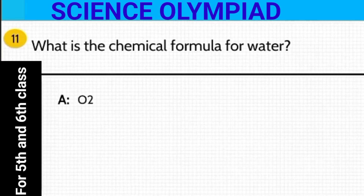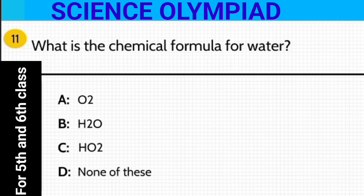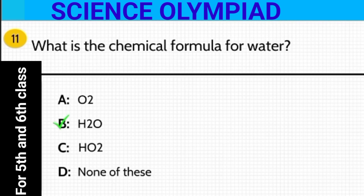What is the chemical formula for water? Look at the options carefully. The answer is option B — H2O. It is the chemical formula for water.